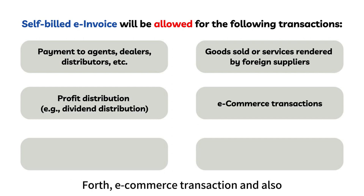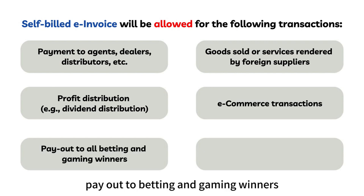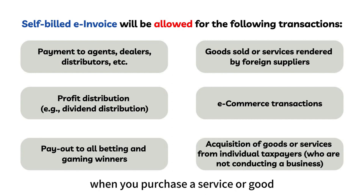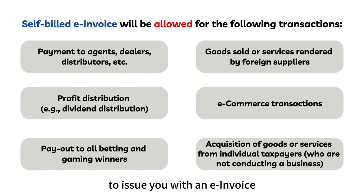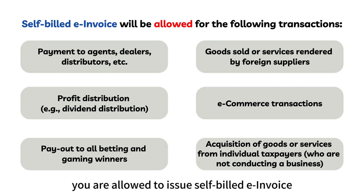Fourth, e-commerce transactions and also payout to betting and gaming winners. And the last one is when you purchase a service or goods from a non-registered person, meaning that they do not have a company to issue you with an e-invoice. Under all these scenarios, you are allowed to issue self-bill e-invoice.